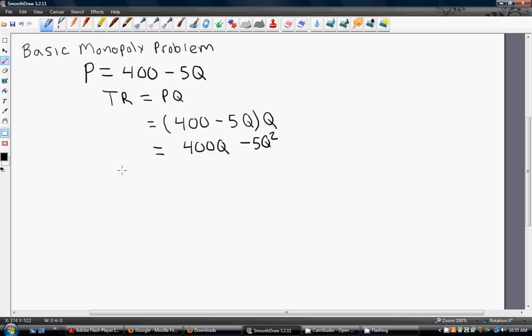Now, let's get marginal revenue. Marginal revenue, the change in revenue from producing one more unit of output, is the slope of the total revenue function, given by the derivative here. And this will equal 400 minus 10Q.